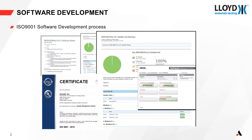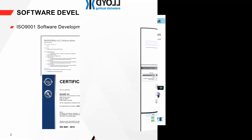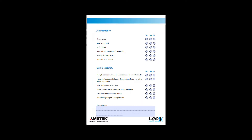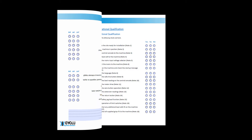Data integrity begins with the design and development process. At Amatek Lord Instruments, our rigorous ISO 9001 procedures validate that the equipment produces repeatable and accurate data. Our installation and operational qualification services verify that the hardware and software are functioning as designed and producing accurate data.